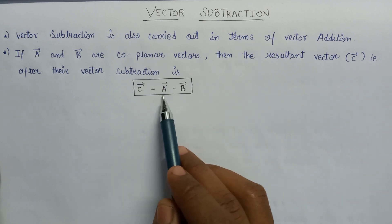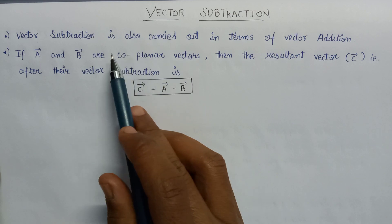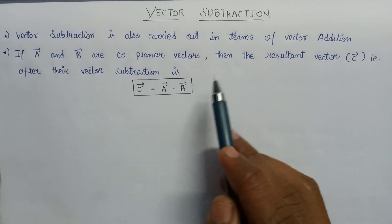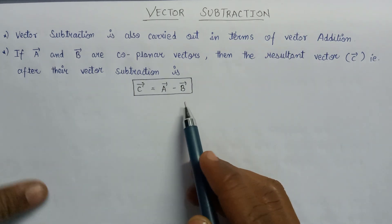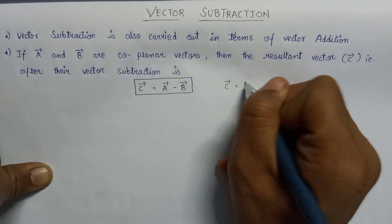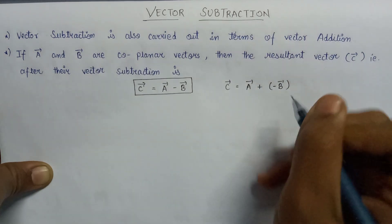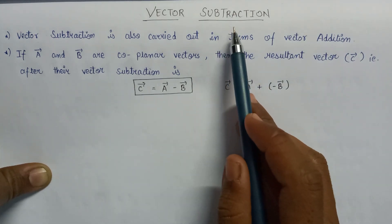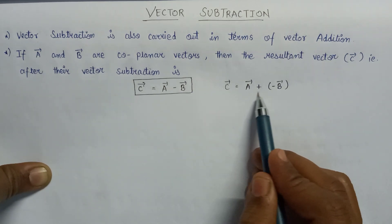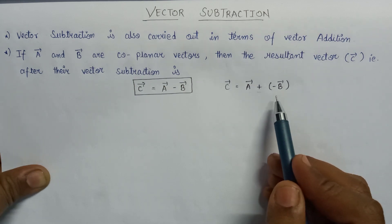So C vector equals A vector minus B vector. Since vector subtraction is carried out in terms of vector addition, the C vector can be evaluated as A vector plus minus B vector. The subtraction will be evaluated in the style of addition only, because here we are performing the addition of A vector and minus B vector.